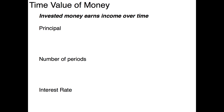There are three parts to the time value of money concept. The first one is the principal, typically denoted by a small p. It represents the amount of the investment or the amount borrowed — so it could be money invested in another company or a principal amount that you have borrowed.